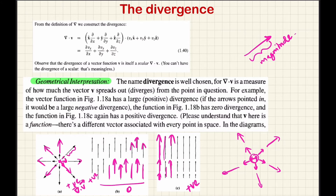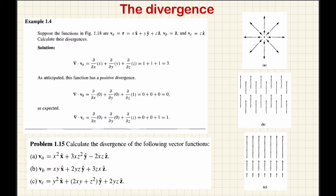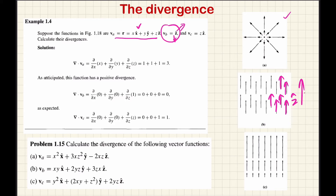The second situation shows a vector field where the magnitude is constant and the direction is constant. The third case, where Vc equals z-cap, represents the third scenario in which the vector field behaves differently from cases A and B.